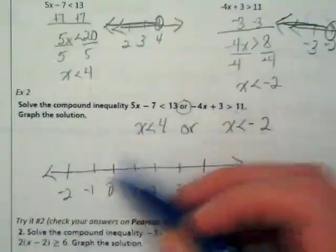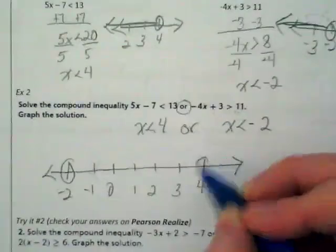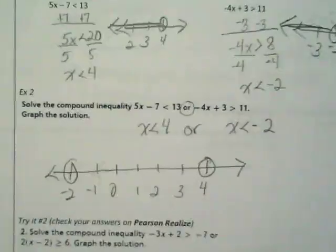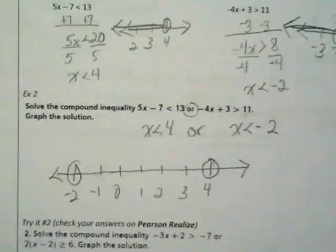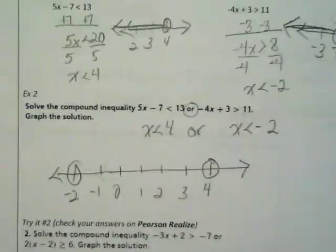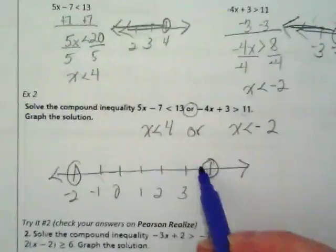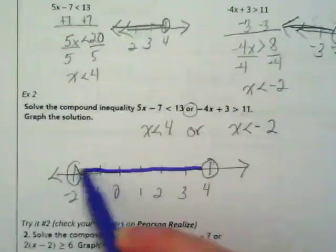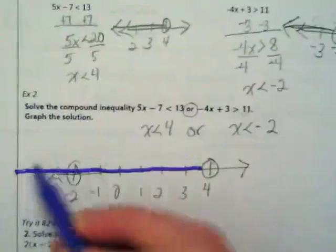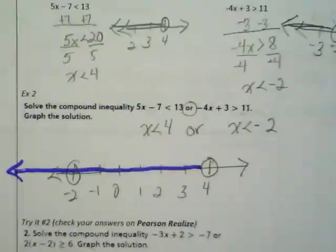I'm going to circle both of them. And when I do the graph for the 4, it's going to go all the way through the negative 2 and keep going. And it basically includes the other line.